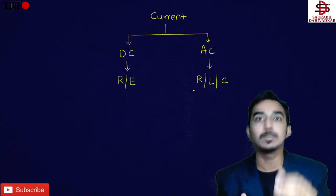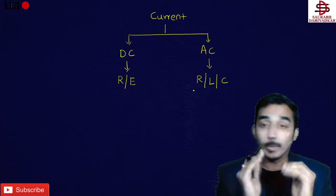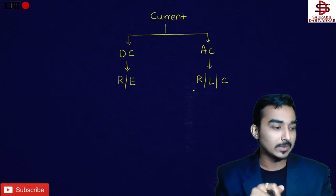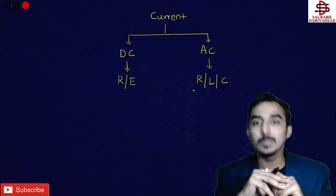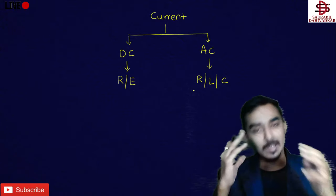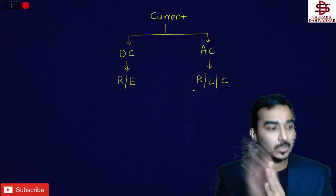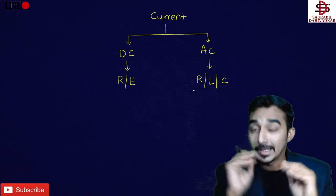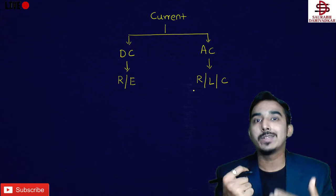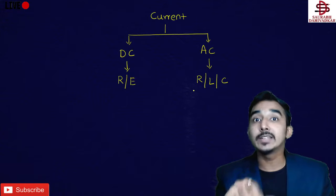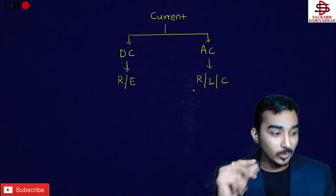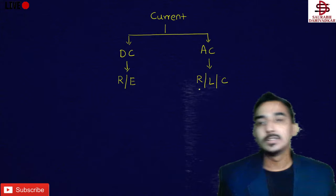Capacitor आ गया मतलब वहाँ पर frequency आ गई. Capacitor आ गया मतलब circuit को tune किया जाता है — tune करना मतलब you can just vary it. DC में direct current — एक ही frequency में जाएगा. AC में it usually flows in a sinusoidal waveform.